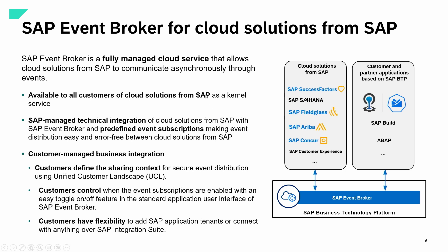The special thing about the SAP Event Broker is that it is a fully managed cloud service — SAP managed. We do not have to take care about the technical details behind it. All these things are pre-configured and managed by SAP. The only thing you have to take care about is checking the customer-managed business integration. Here we just use the Unified Customer Landscape — the UCL. This is a screen where you can activate and deactivate your events. You as a customer have all these control activities — what has to be enabled — and it's like a toggle on/off feature. Very simple, very nice, and it makes life easy — just as ready to run as we promise. You also have full flexibility to add SAP applications and tenants as needed.